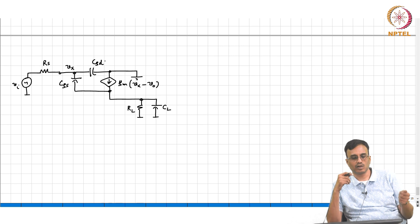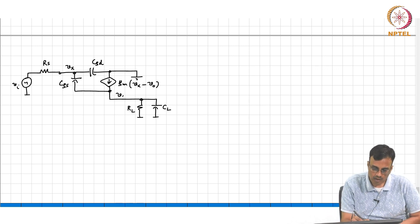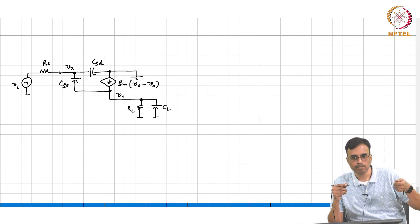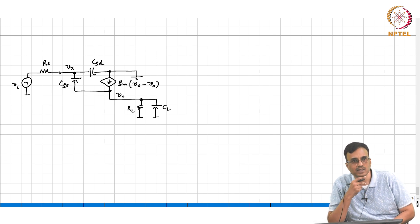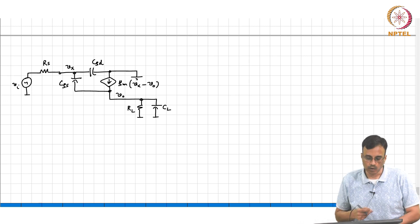Basically through VX, if you pull up VX the output VO is getting pulled up, and GM is also pushing current into VO if VX increases. So both of them are moving in the same direction. So you should expect to see an LHP zero.